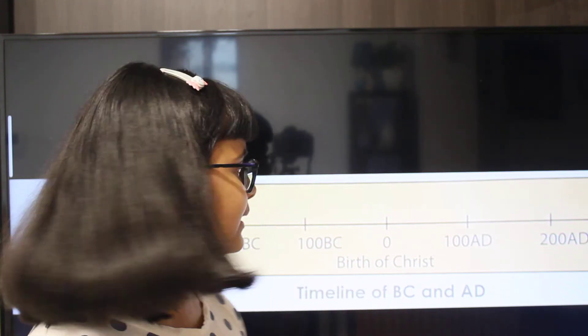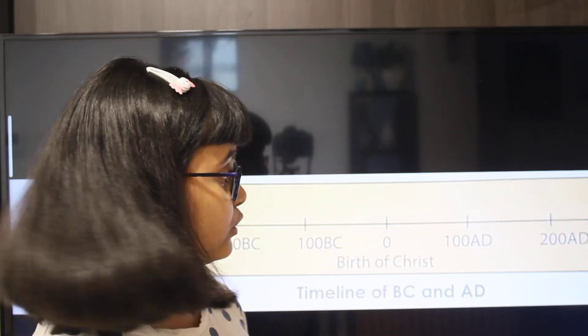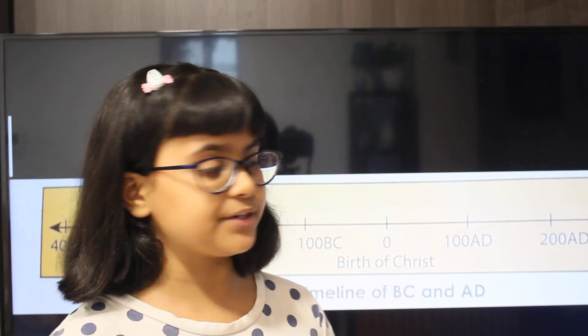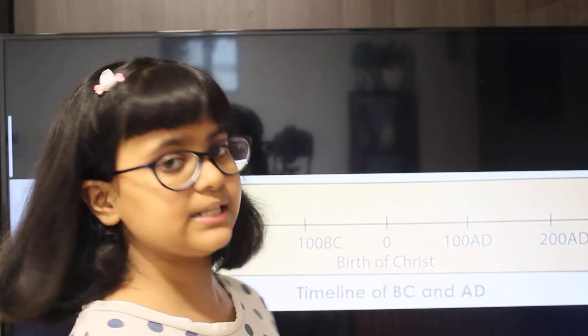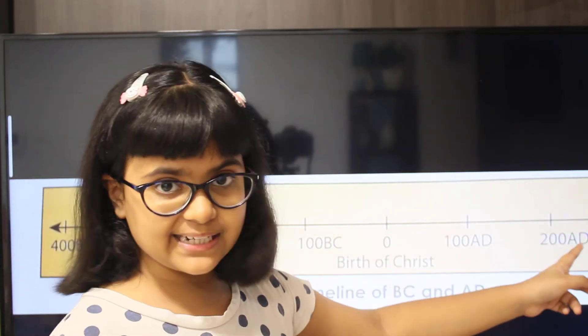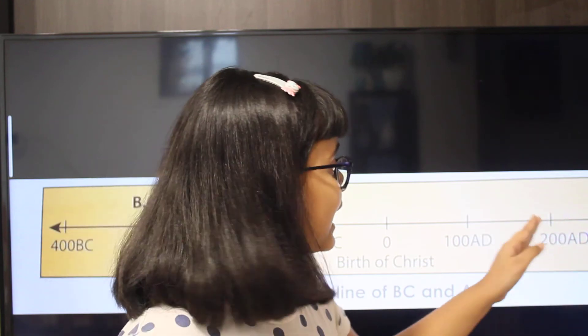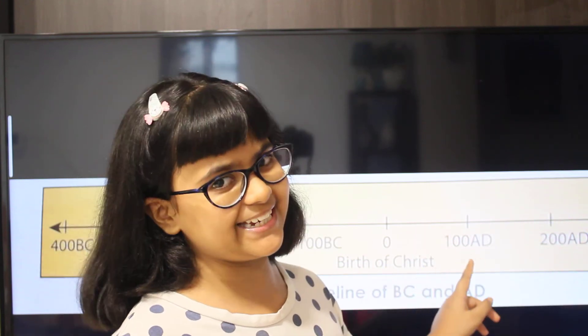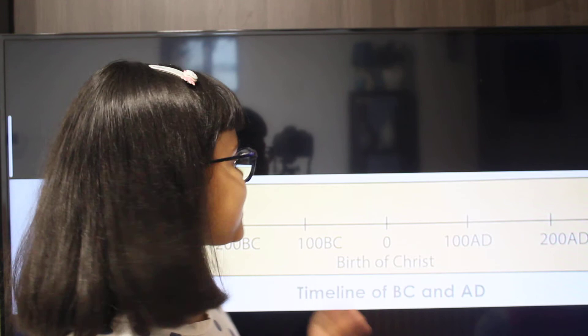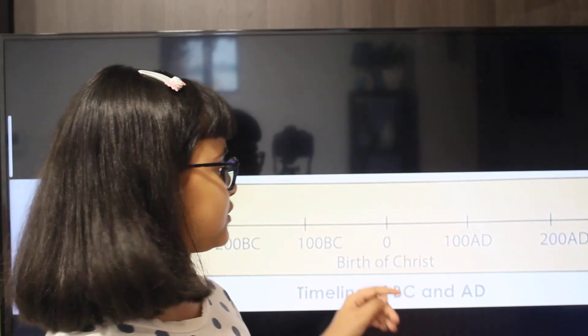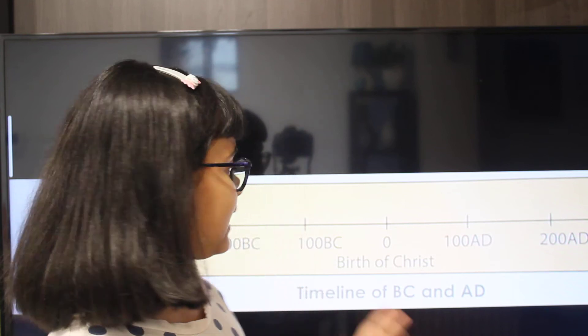AD stands for Anno Domini, which means 'in the year of the Lord.' As BC is counted backwards, AD is counted forwards. For example, 200 AD comes after 100 AD. The year zero is considered as the birth of Christ.